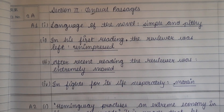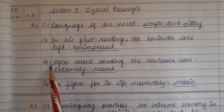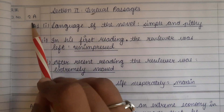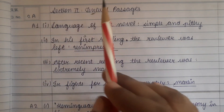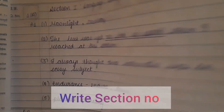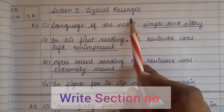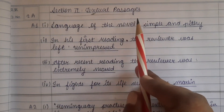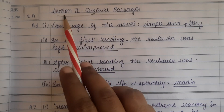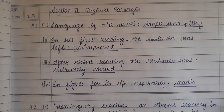So make sure that you focus on all these things. First of all, make margin on both sides. Write the question number very properly. And do not forget to put your section as well — this child has also put Section 1: Language Study, and then Section 2: Textual Passages. As you start a new section, you will always write the section heading at the top. So these were all the general tips — now let's talk in detail about all the sections.